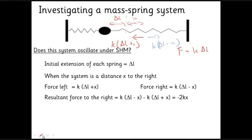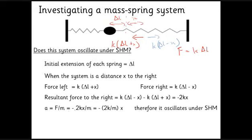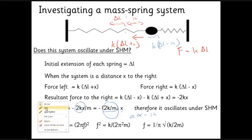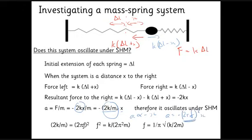This confirms simple harmonic motion. Acceleration equals force divided by mass, so a = −(2k/m)x. Since 2k/m is a constant and a is proportional to −x, this satisfies the definition of SHM. We also know the constant of proportionality: since a = −(2πf)²x, we get (2πf)² = 2k/m, which gives a formula for frequency: f = (1/π)√(k/2m).